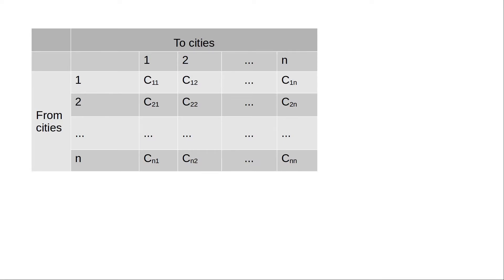Let's go back to the table. If the salesman travels from city number 2 to city number 1, X21 will be 1 and C21 will be the cost. So the cost of travel from city 2 to city 1, if it has to be added to the itinerary, is going to be C21 multiplied by X21, which equals 1. C11 should be set to infinity, C22 should be set to infinity, and CNN should also be set to infinity.